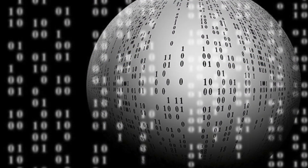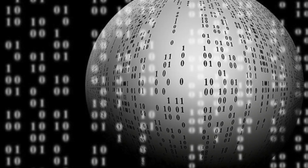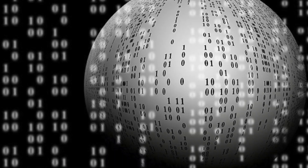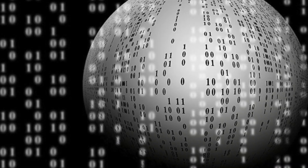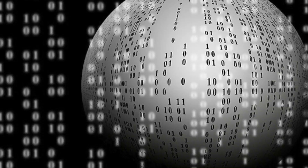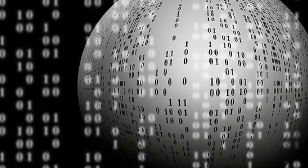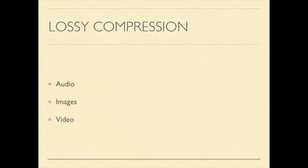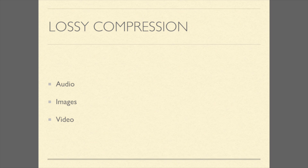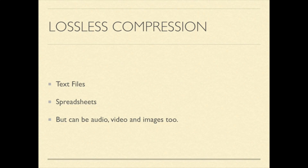Mathematicians and computer scientists sought to create an algorithm that compresses data. There are two kinds of compression: lossy and lossless. Lossy compression consists of audio, images, and video. Lossless compression is used mostly for text files and spreadsheets.